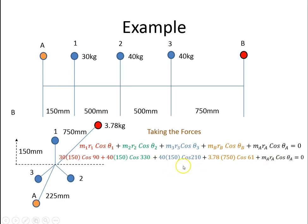You can read those yourselves. When I put those values in, MaRa cosine θA works out to be minus 1374.